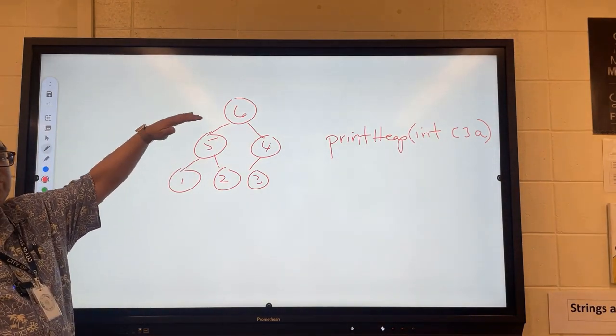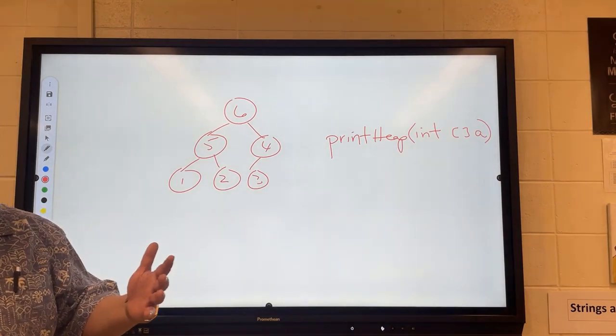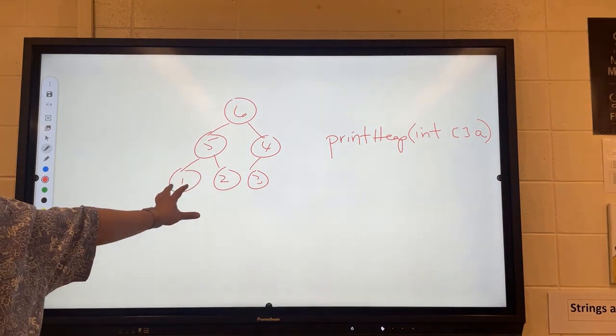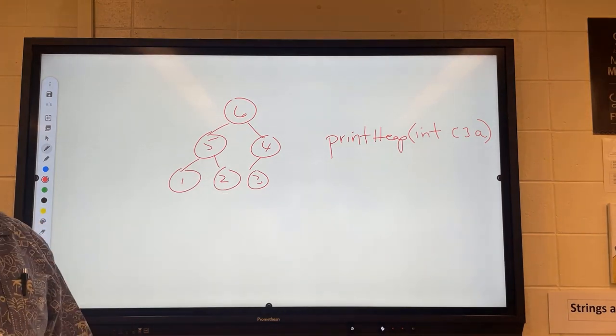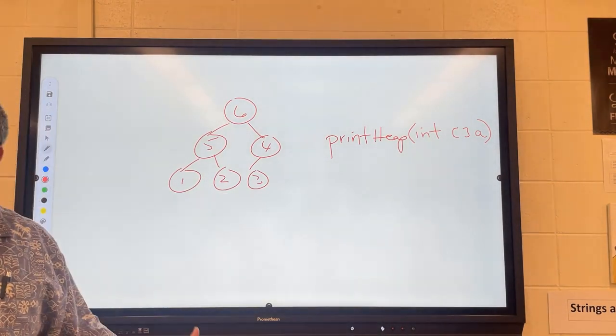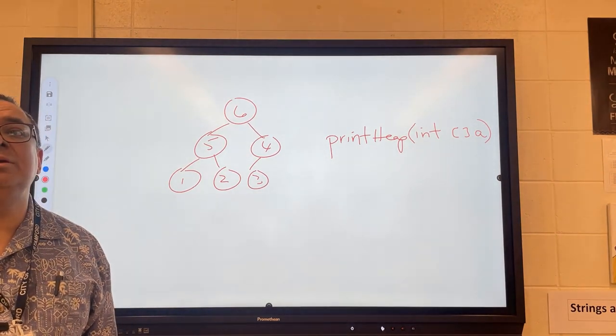What we want to do is we want to print it in level order. Now you remember how complicated level order was before when we had an arbitrary binary tree, but here we have some advantages. What's the main advantage that we have here in a heap that we didn't have in an arbitrary binary tree? What do we know about the heap shape versus some regular tree?